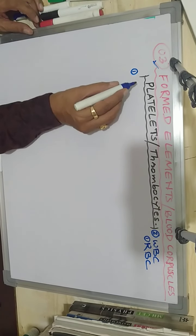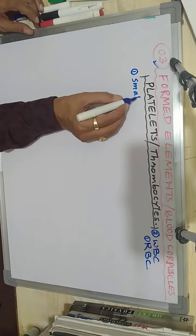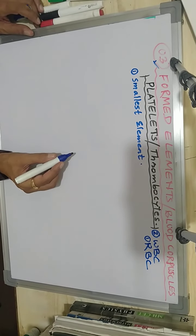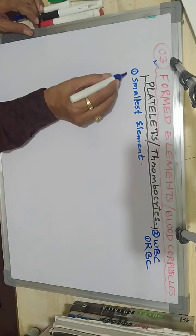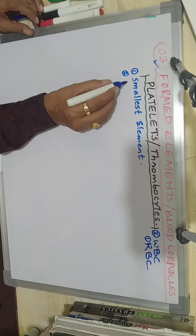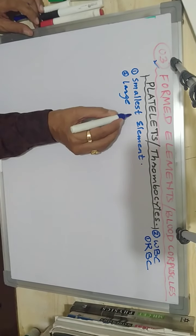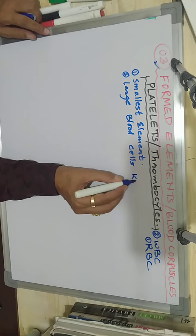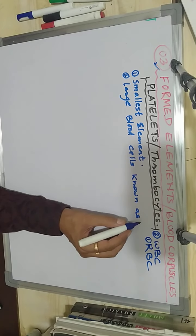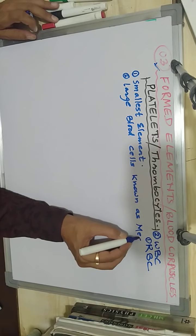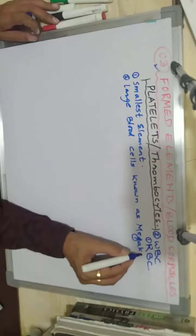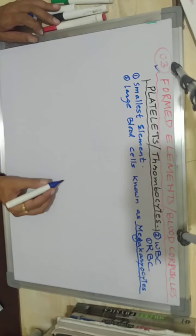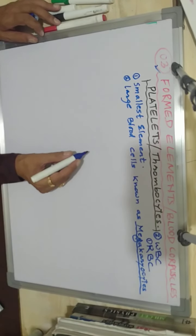The first characteristic feature of platelets is that they are the smallest element of blood corpuscles. They are formed by large blood cells called megakaryocytes, found in the bone marrow.